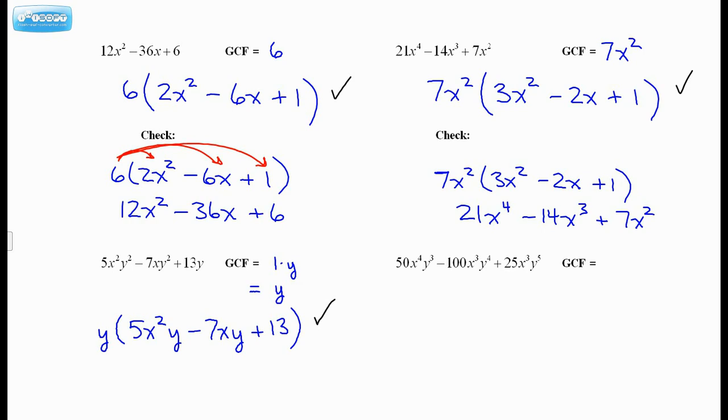All right, we have a crazy one here, but I'm not scared. I think it'll be okay. Okay, so let's just look at the coefficients. 50, negative 100, and 25. Well, I can tell already that the greatest common factor of the coefficients is 25. That's all right. Let's look at the x's. x⁴, x³, x³. Well, the biggest one shared by all is x³. y³, y³, y⁴, y⁵, so it's y³. That's the best I can do.